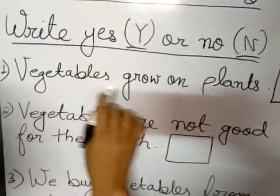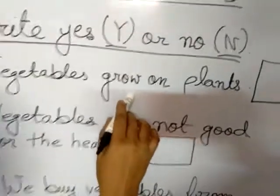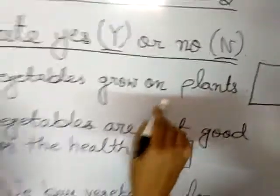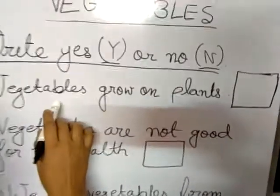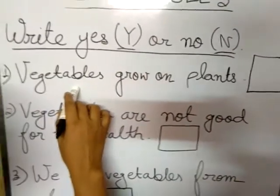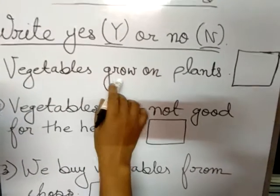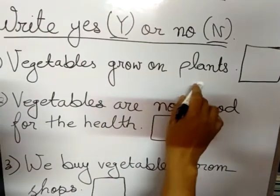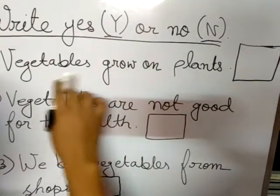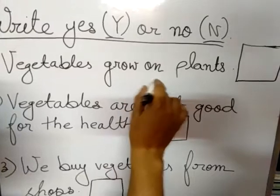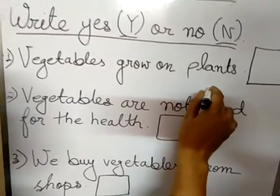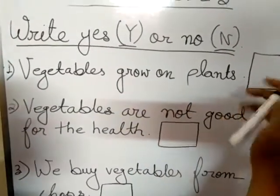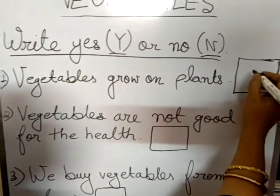Number one: Vegetables grow on plants. Yes, vegetables grow on plants. The answer is yes.